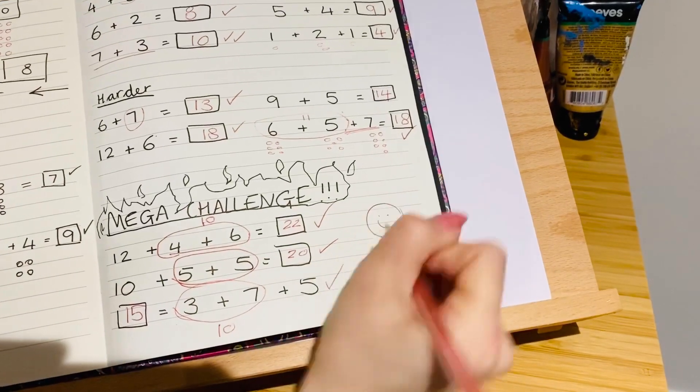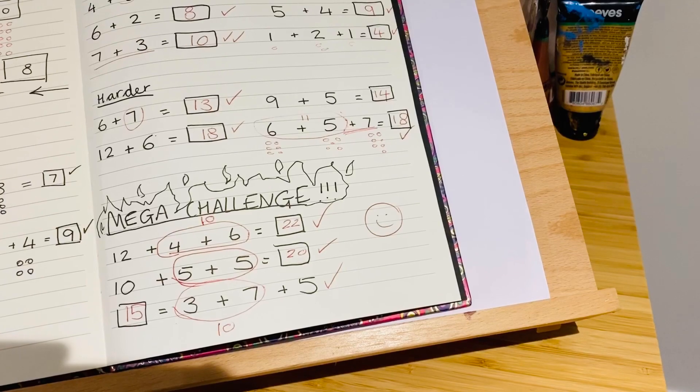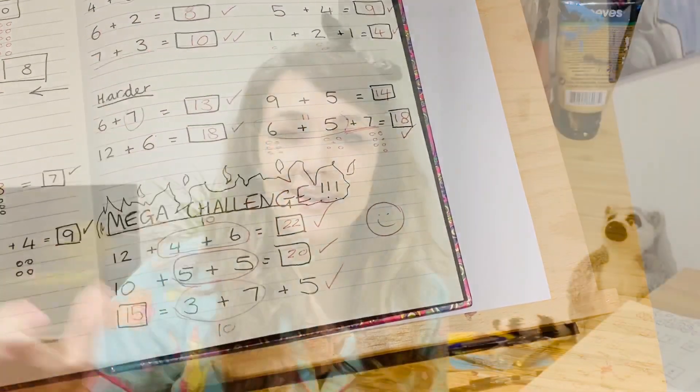Well done, everybody. That is our adding for today. Give yourselves a pat on the back. If you feel like you want to carry on with some maths, then maybe you could set yourself some challenges. You could start with numbers one to ten, maybe try some numbers one to twenty. Use some of the ideas that we talked about today. Happy mathing.